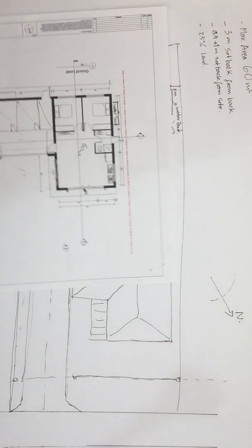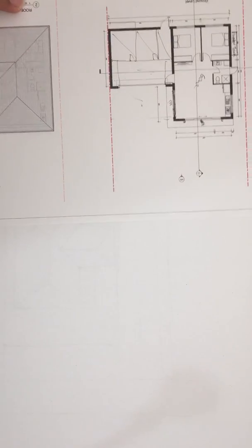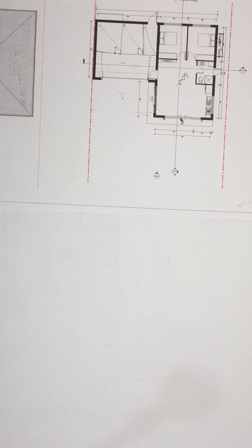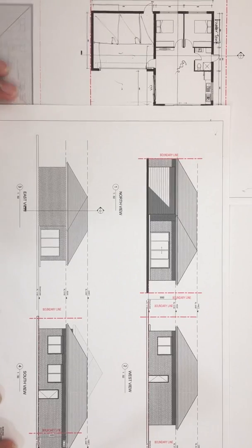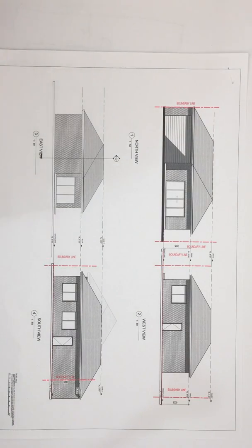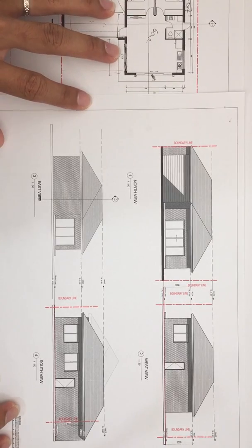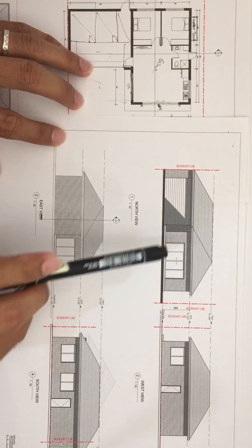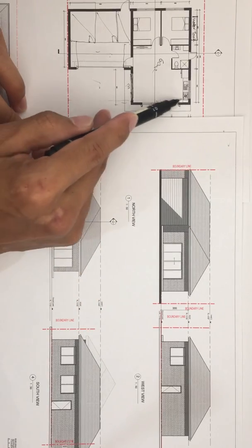This is the floor plan of the granite flat and this is the roof of the granite flat. I'll move this out to show you — this is the plan, this is the elevation. So this is the front elevation — when you look from here you can see this.